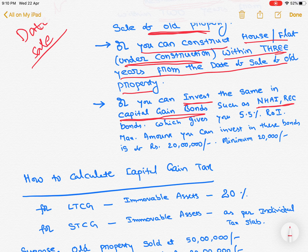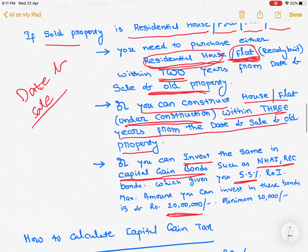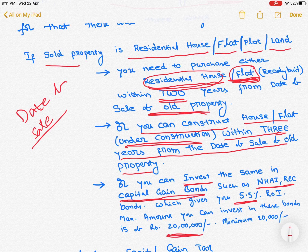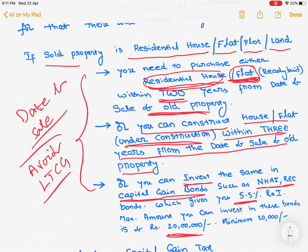If you invest this amount in capital gain bonds, they will provide 5.5% rate of interest on those investments, but up to a maximum of 20 lakhs. So if you do either of these 3 options, you can avoid payment of long term capital gain tax.